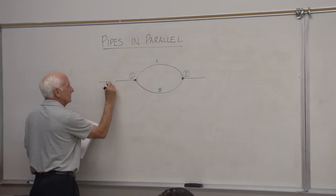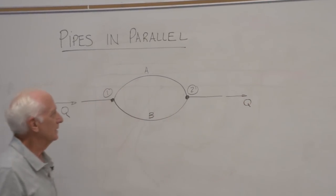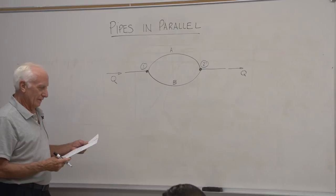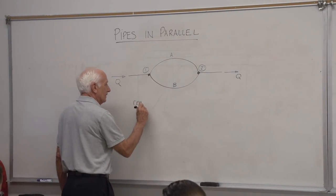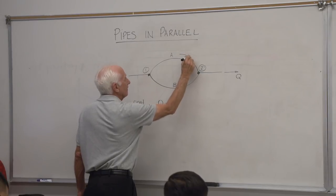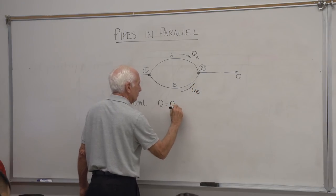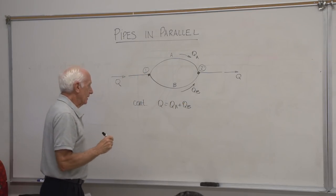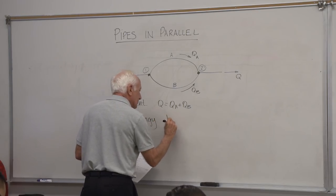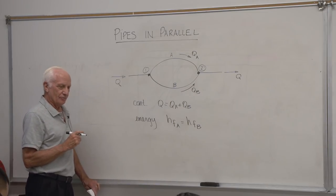The flow rate coming into the parallel pipe is Q, and the flow rate leaving the parallel pipe is Q — steady state. Some of the flow goes through pipe A, some goes through pipe B. First, continuity: Q equals QA plus QB. The head loss equation, energy: HFA equals HFB. The head loss due to friction in pipe A equals the head loss due to friction in pipe B.